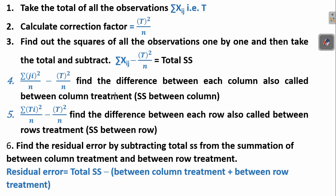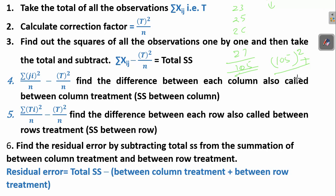Next there is something called between column treatment. Between column treatment is calculated by taking the values of each column — say 23, 25, 26, 27 — taking their summation, squaring those values, dividing by N, and doing that for all columns. We add those results together, divide each by N, and then subtract from the correction factor to get the column difference.